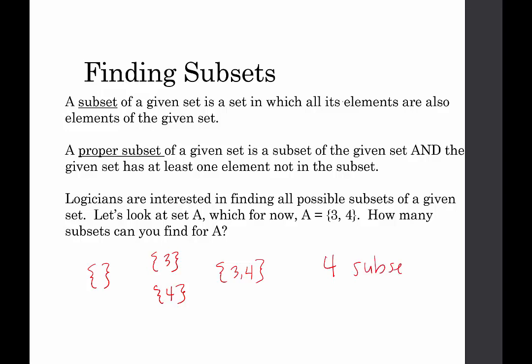How many proper subsets do we see? There are three proper subsets — the null set, {3}, and {4}. The set itself is just a subset, not a proper subset. So three proper subsets.